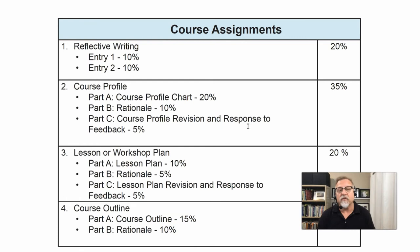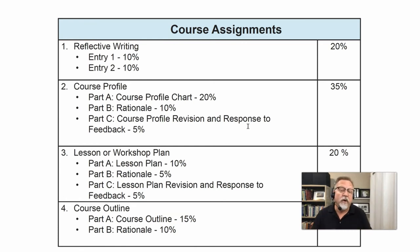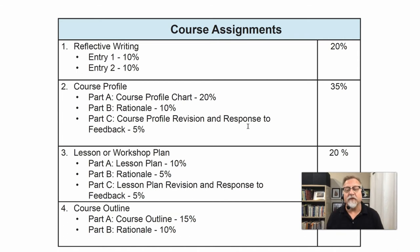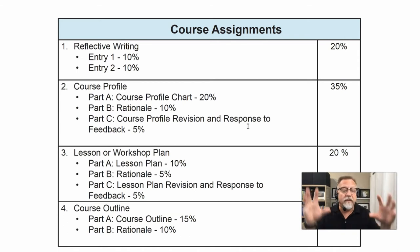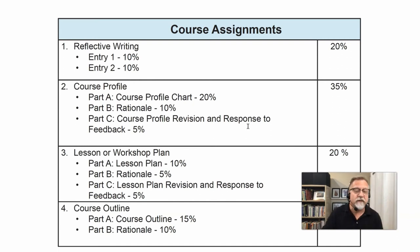After you've got that course profile developed, you will then develop a lesson plan or a workshop plan and then a subsequent rationale. And then finally, you'll develop a course outline that provides an explanation as to how the course will run, with a subsequent rationale document.